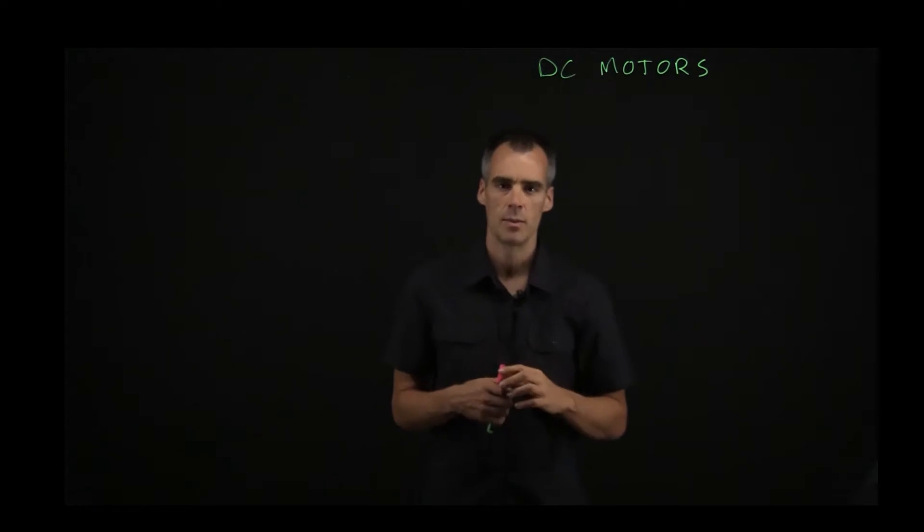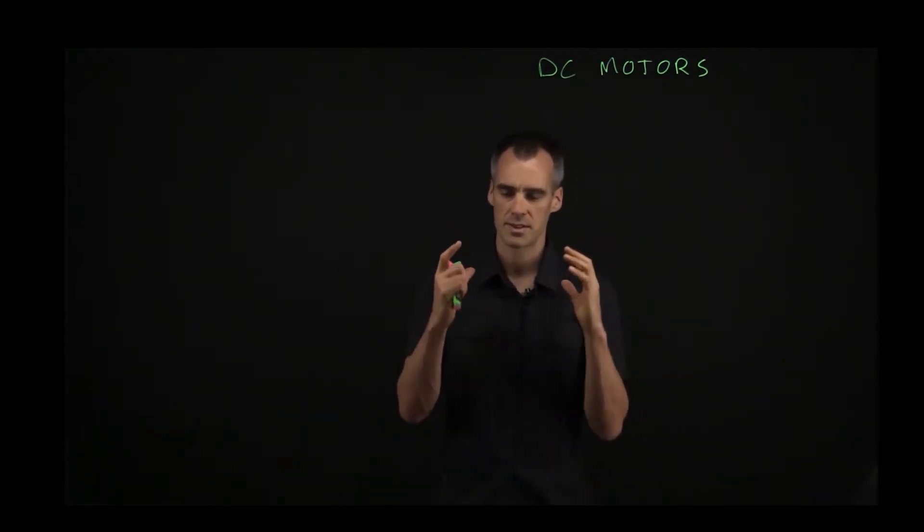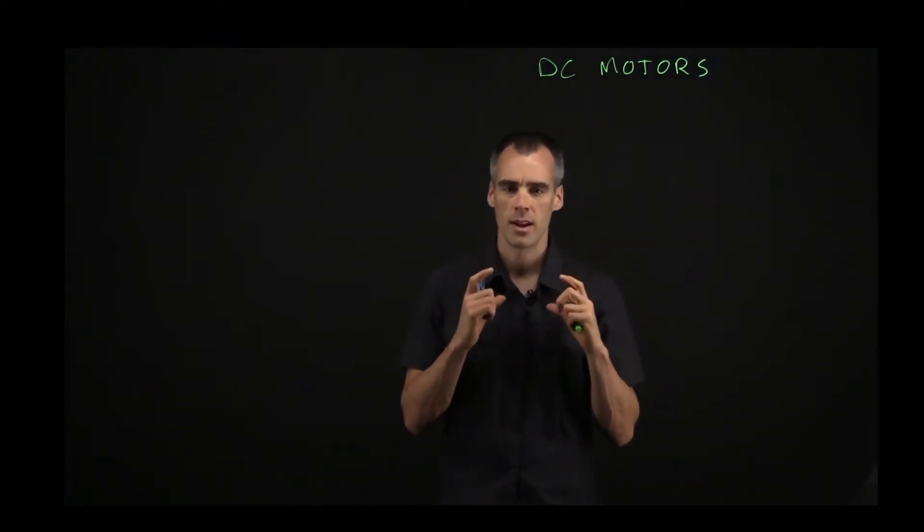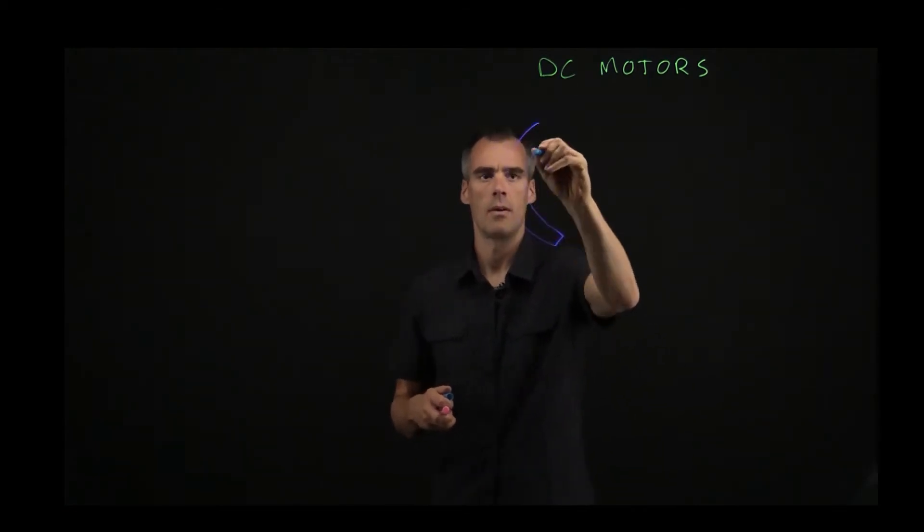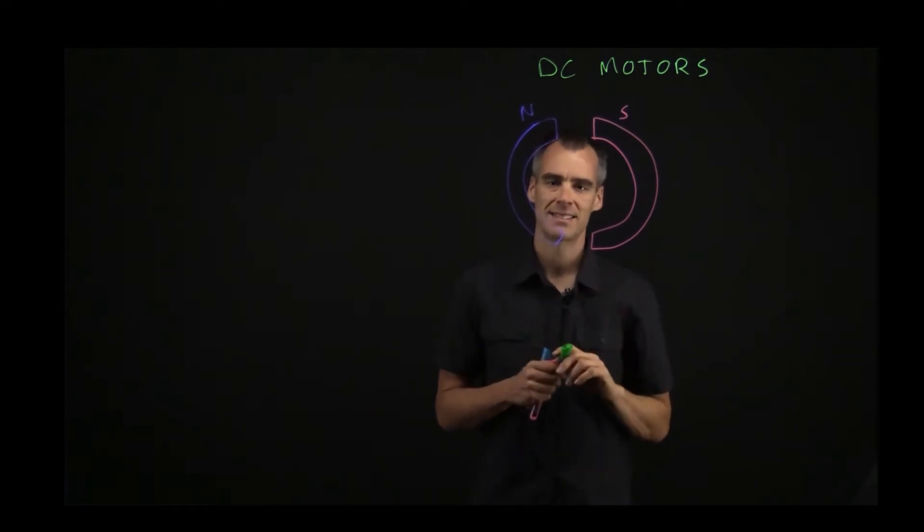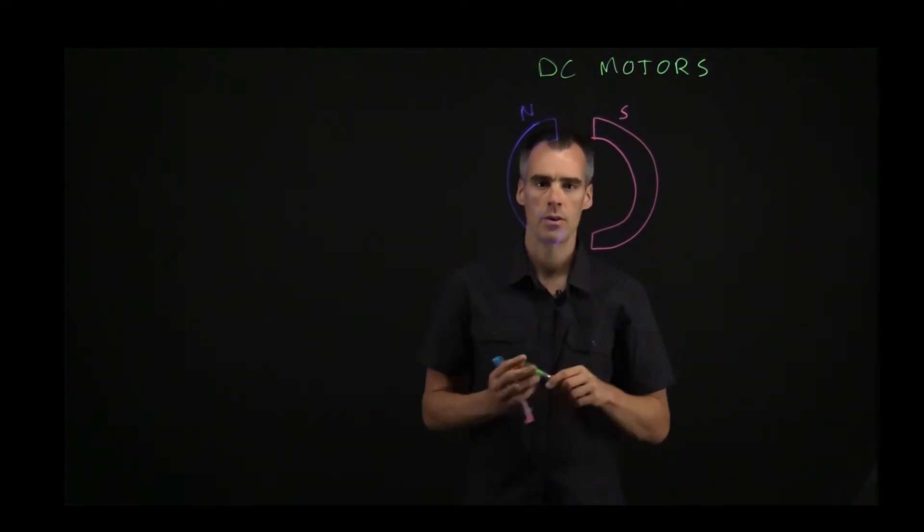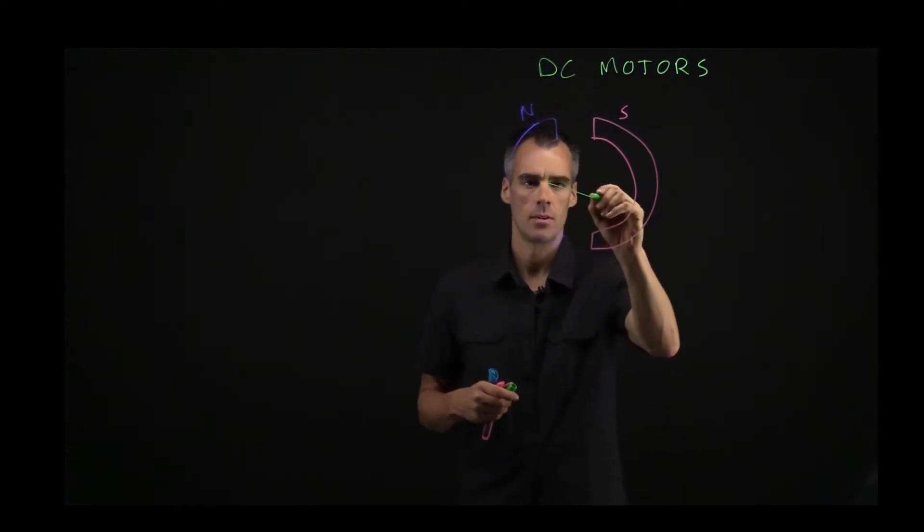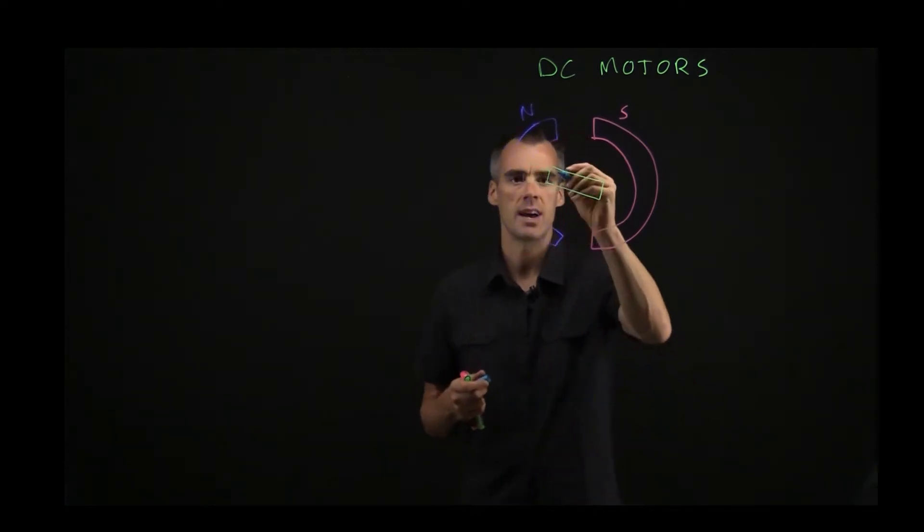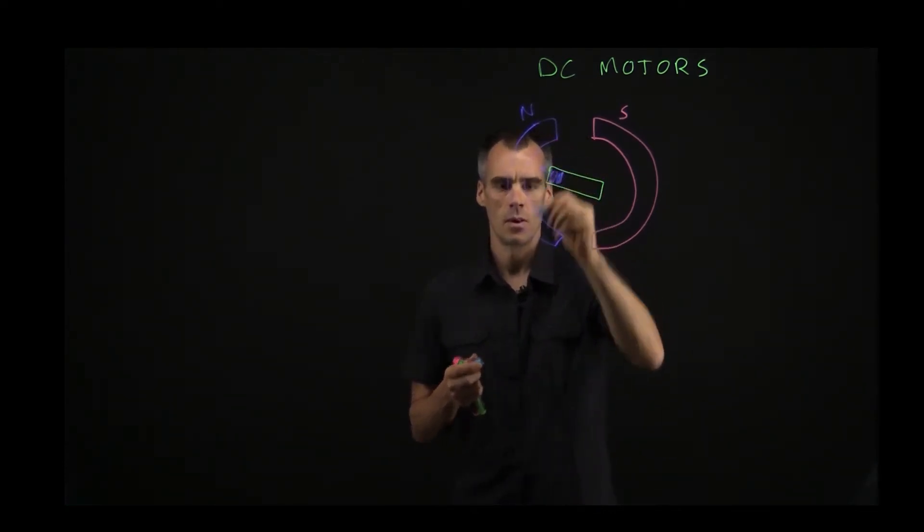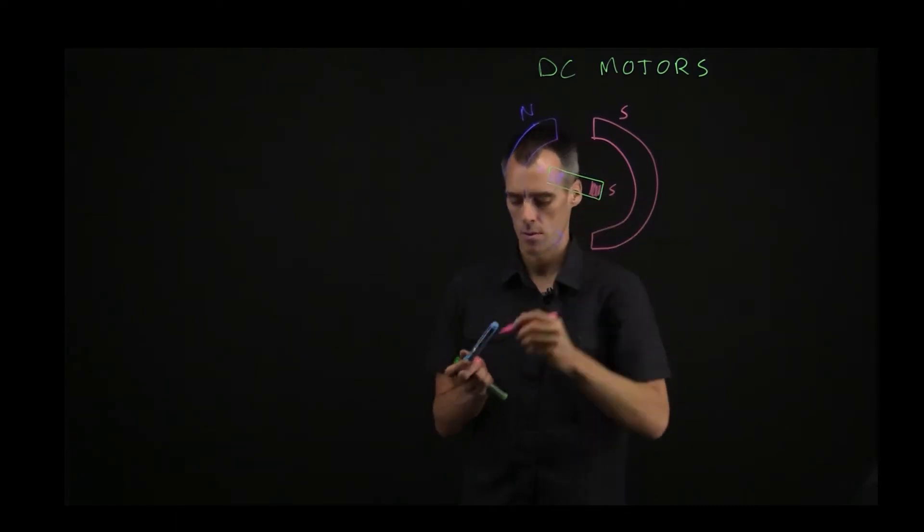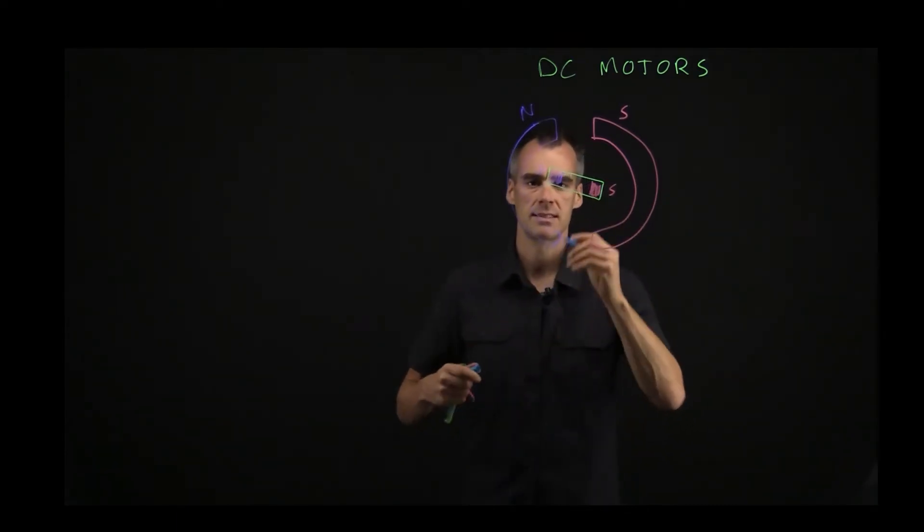Alright, so basic structure of a DC motor is going to consist primarily of the stator. So let's go ahead and draw a picture of that. It's got two magnets and one's going to be north and one's going to be south. So that's the stator and inside the stator is the rotor and the rotor is a magnet as well. And it's going to have a north side and a south side. So let's just say for now the north side is over here and our south side is over here.